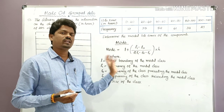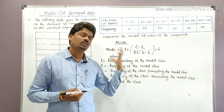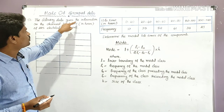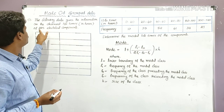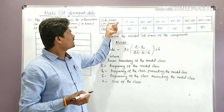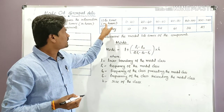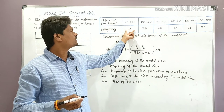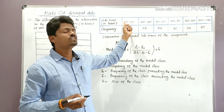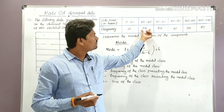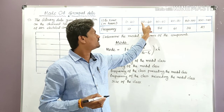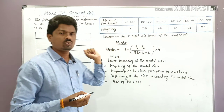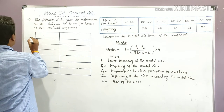Now let's look at a question. The following data gives information on the observed lifetimes in hours of 225 electrical components. He has given lifetimes in hours and the corresponding frequencies. We have to find the mode for the given data.